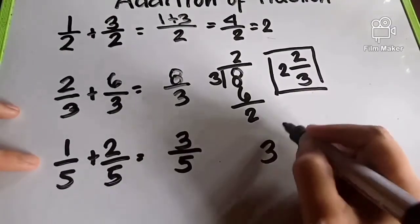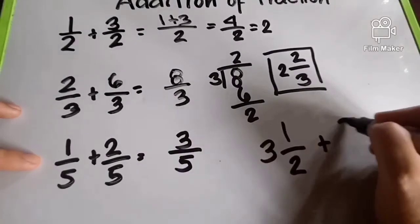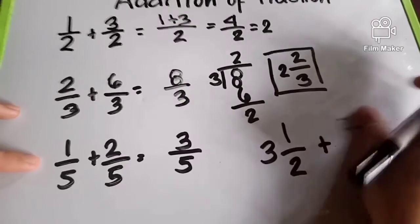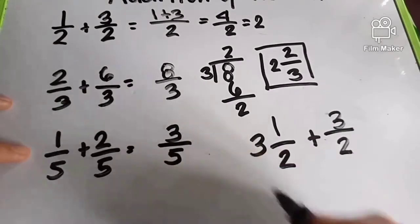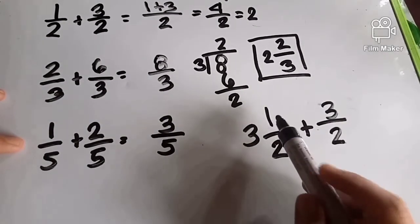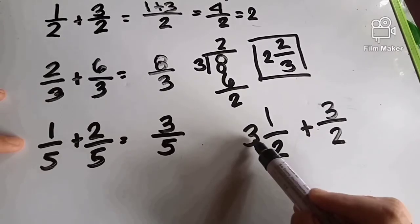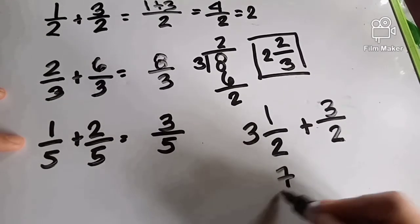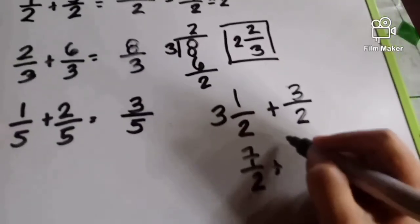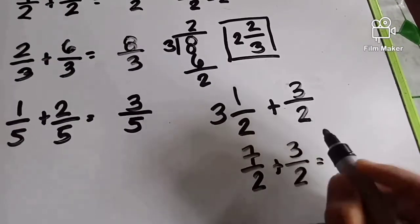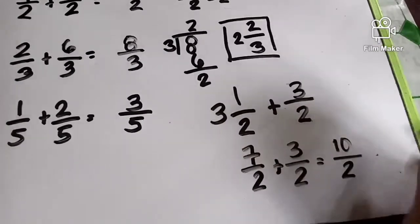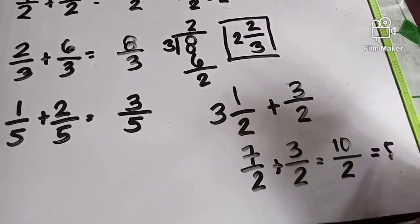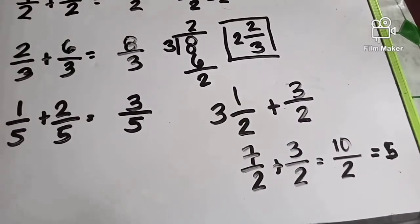What if ang given natin ay 3 and 1 half plus 2 and 3 over 2? So, ang gagawin mo: 3 times 2 is 6, plus 1, becomes 7 over 2. Plus 3 over 2. So 7 plus 3 will become 10. So 10 divided by 2. Madali lang siya — hindi naman mahirap ang addition of fraction pag similar.